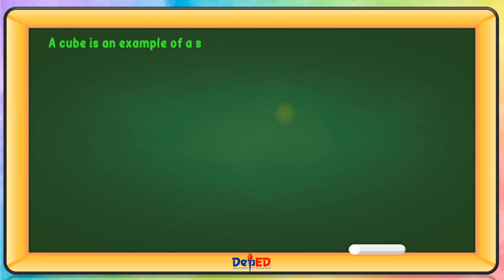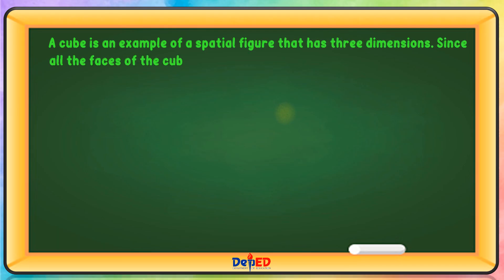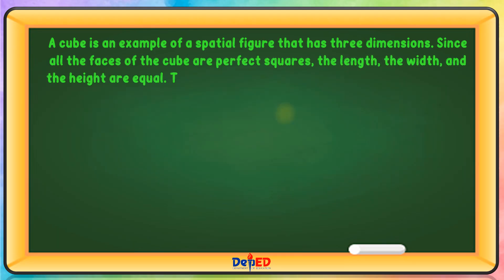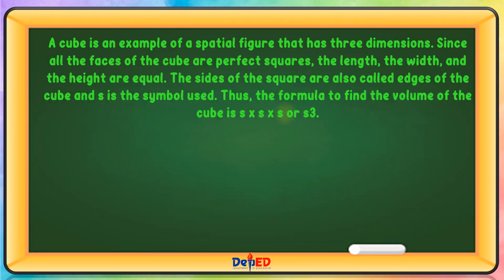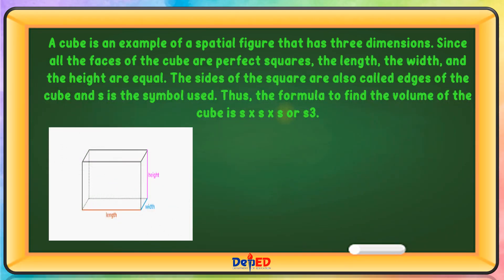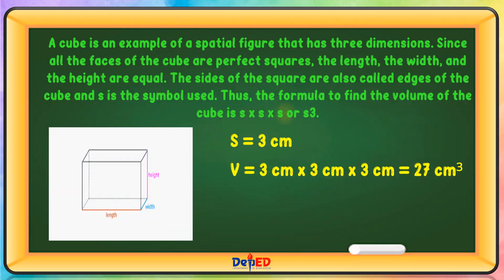A cube is an example of a spatial figure that has three dimensions. Since all the faces of the cube are perfect squares, the length, the width, and the height are equal. The sides of the square are also called edges of the cube, and S is the symbol used. Thus, the formula to find the volume of the cube is S × S × S. For example, if the side is equal to 3 cm, the volume is 3 cm × 3 cm × 3 cm, which equals 27 cubic centimeters.